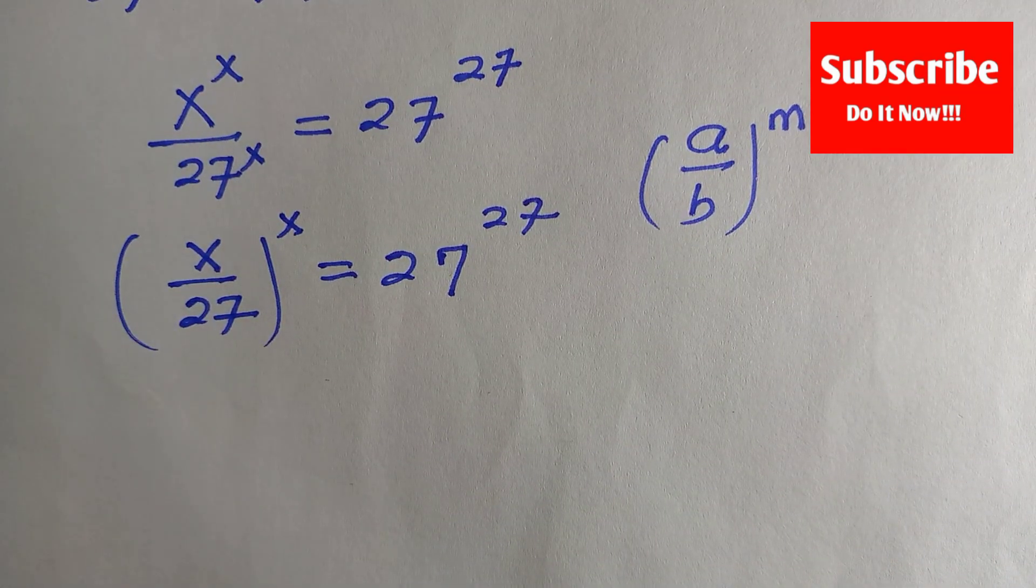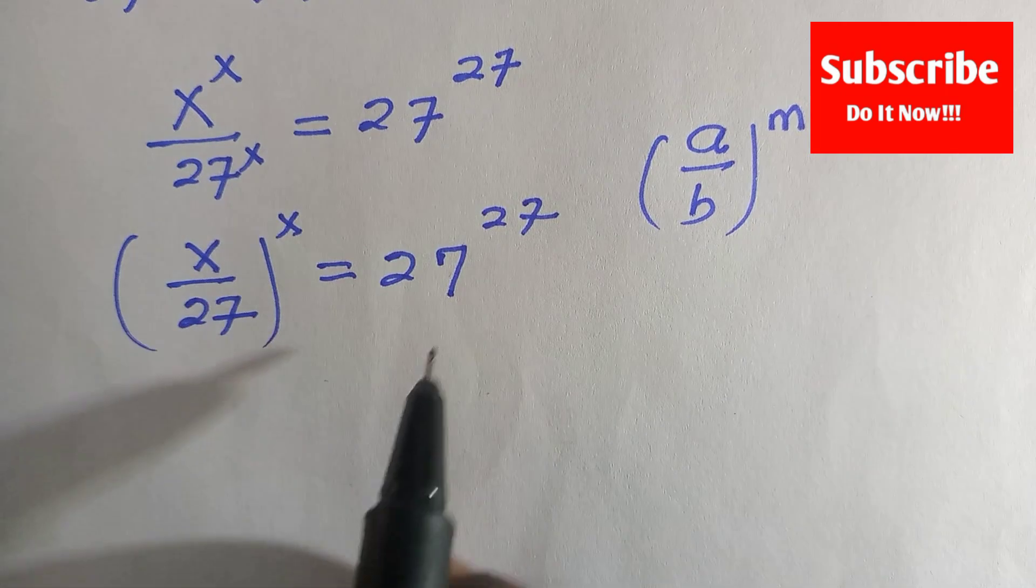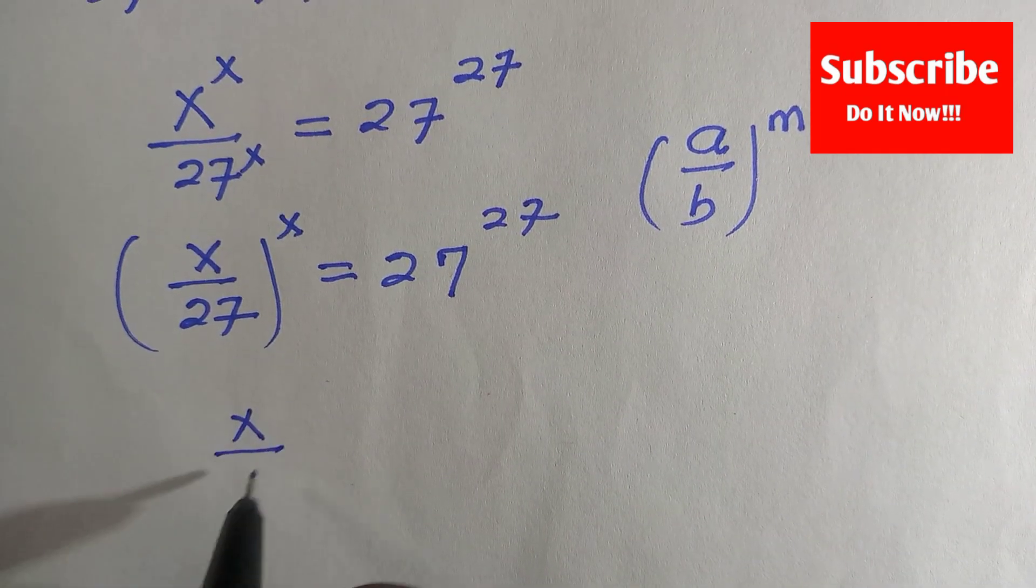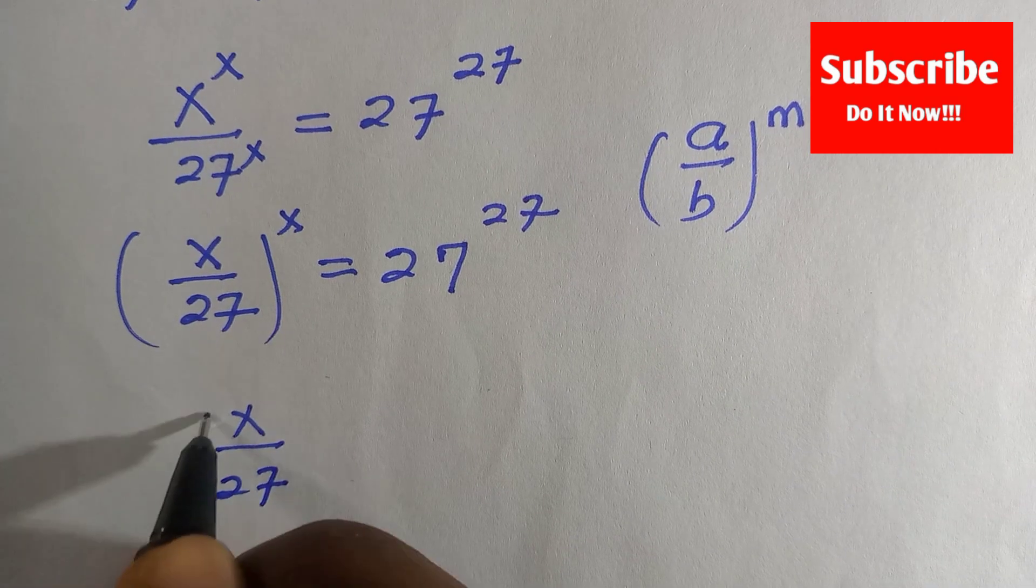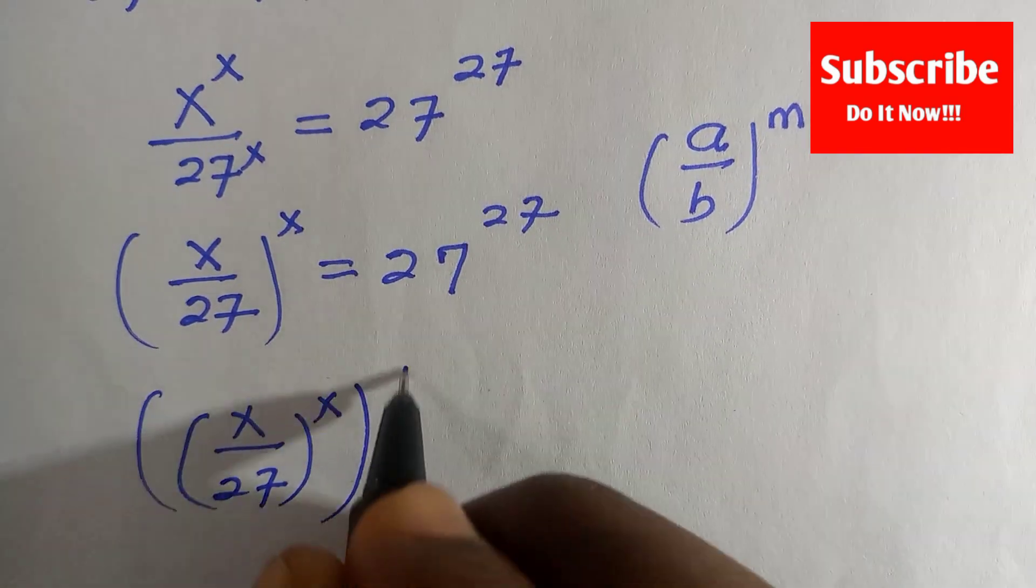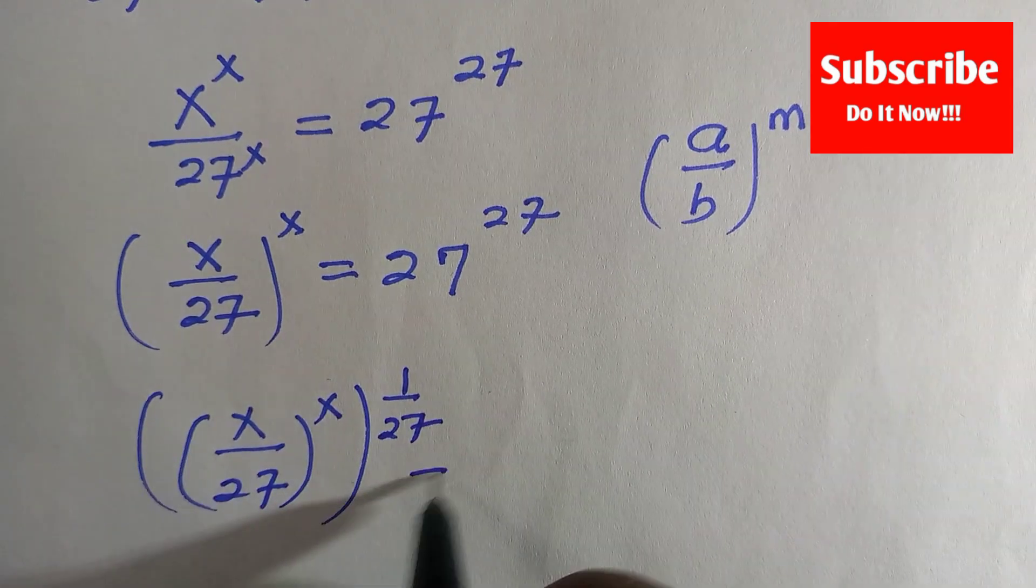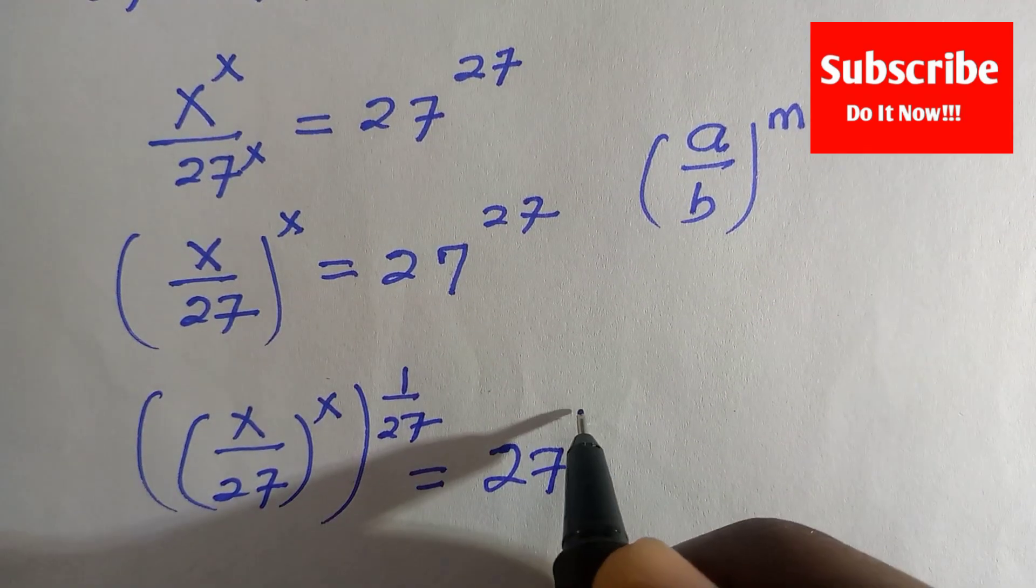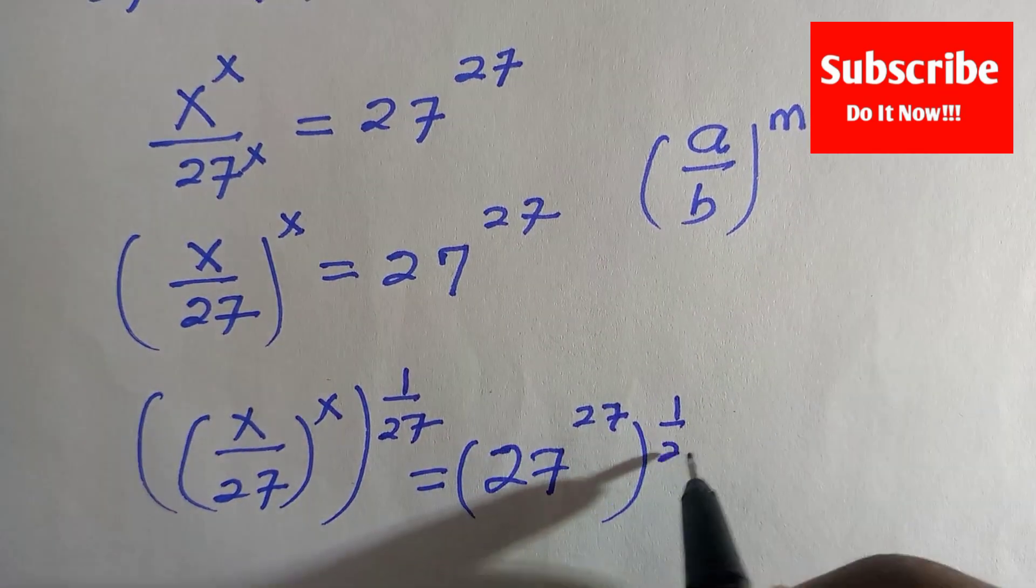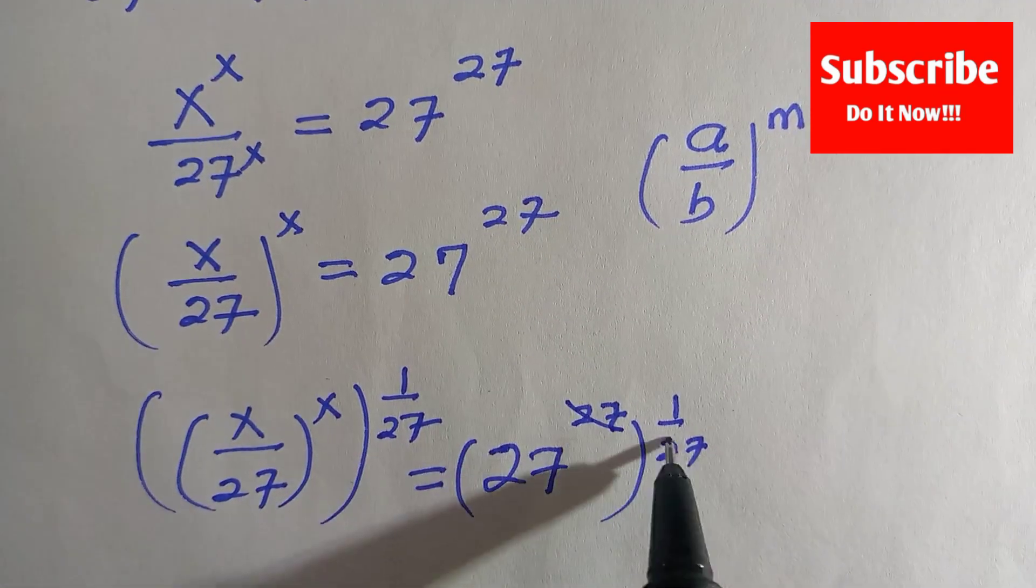I'm going to take the 27th root of both sides to make this one remain as 27. By doing that we have (x/27)^x raised to power 1/27 equals 27^27 raised to power 1/27. If 27 cancels with 27...